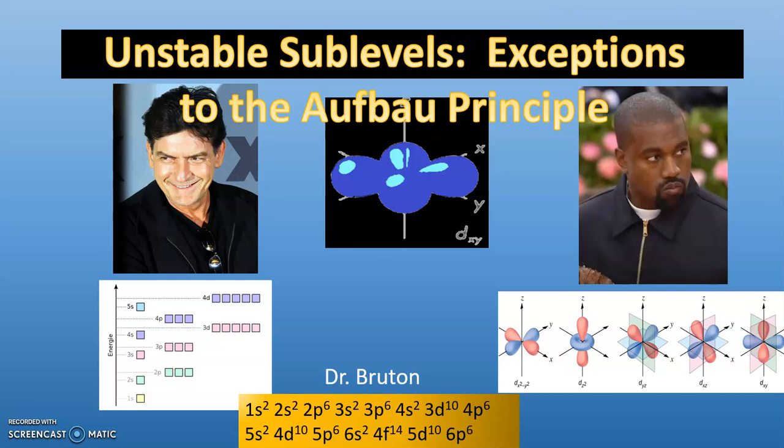What I'm discussing now has to do with unstable configurations that happen in some of the sub-levels that go against the Aufbau principle. That is, starting at the lowest level, adding electrons to the lowest level, and building up from there. There are some exceptions to the rules. They're actually fairly easy after you see how they are put together, so we're going to proceed on to that now.